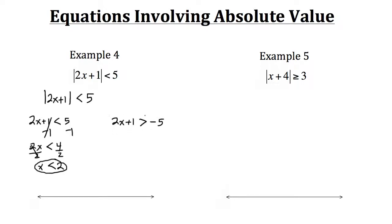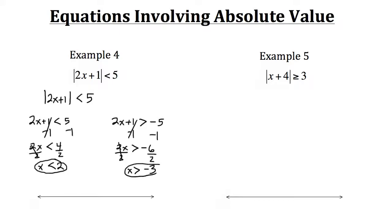Now let's do the same thing on the other side. Subtract 1 from both sides, which gives us 2x is greater than negative 6 — that's negative 5 minus 1. Now divide by 2, and that leaves us with x is greater than negative 3. So there's another part to our solution.